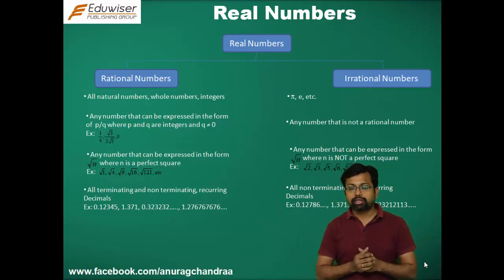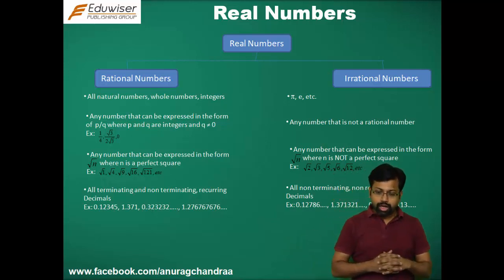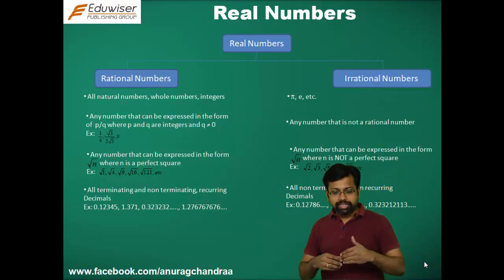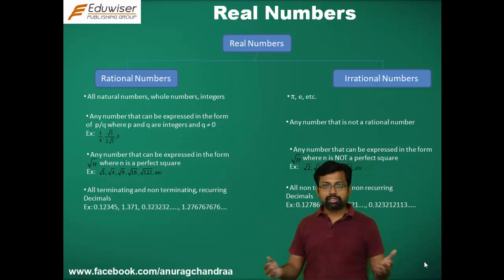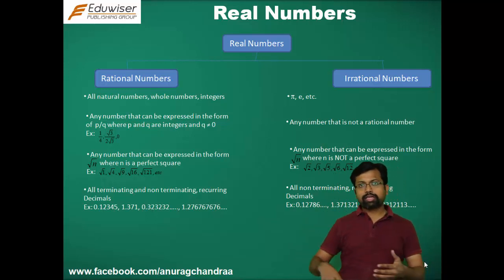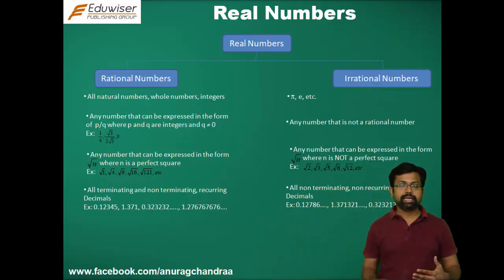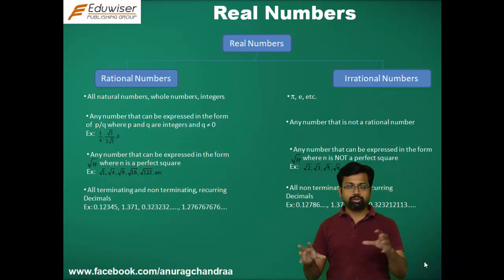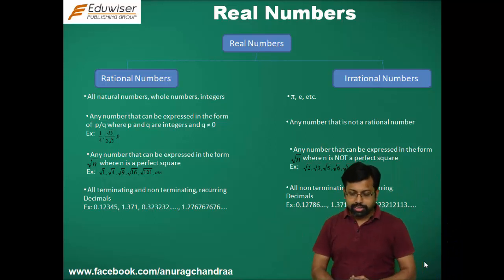Now, how do we differentiate between rational and irrational numbers? There are many ways to do it. The first is that any natural number, whole number, or integer that you see is going to be a rational number, whereas numbers like pi and e are going to be irrational numbers. You can identify them just by having a look at them.